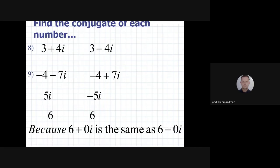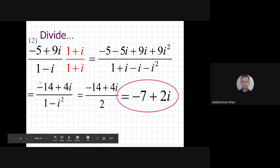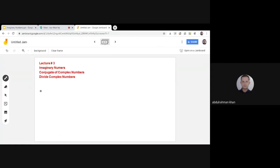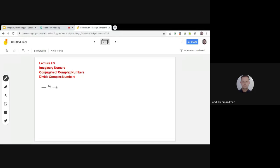This is the conjugate of complex numbers. The next part is division. Divide minus 5 plus 9i over 1 minus i.